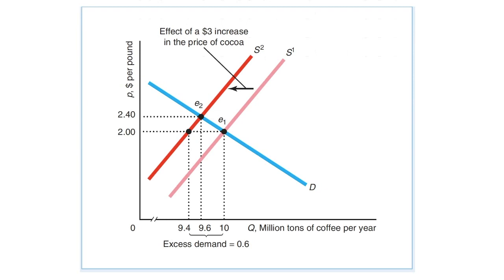For example, if the production costs increase, the supply curve will shift to the left. As a result, the equilibrium price increases and the equilibrium quantity decreases.